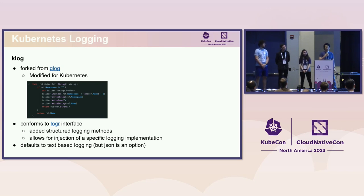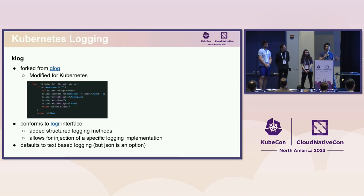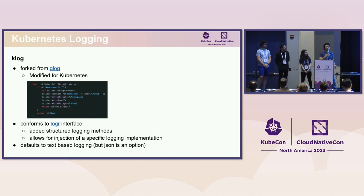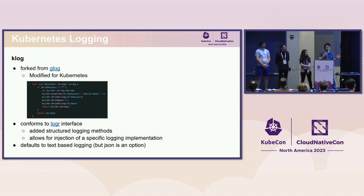What we have done is integrated logr directly into Klog. So Klog is not only an implementation of a logger — it also exposes an API that allows you to inject other loggers into it. This allows you to output logs in multiple formats, and specifically today we support text and JSON output.